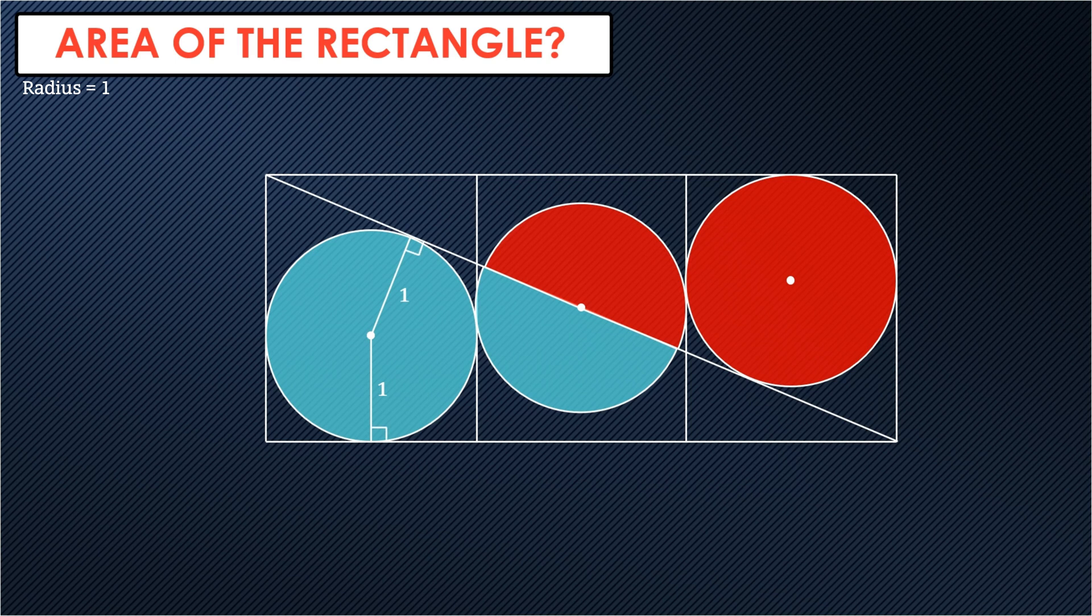To work out the area of the rectangle, it is the length times the width. The length is the sum of the diameters of the circles. So that's three times two is six. And the length of the rectangle, we actually divide into two parts, one and five units.